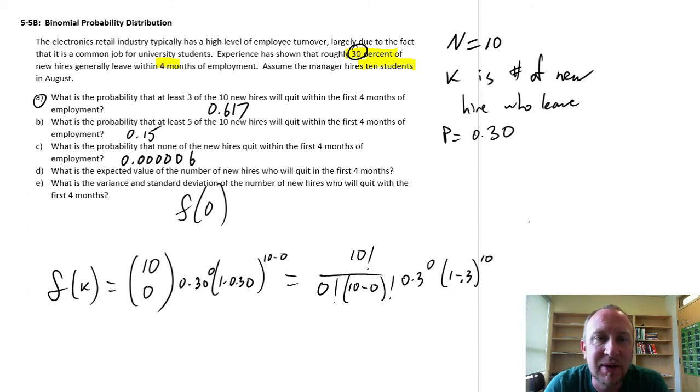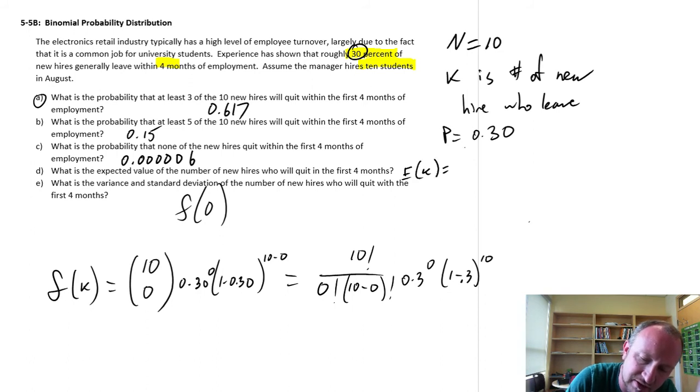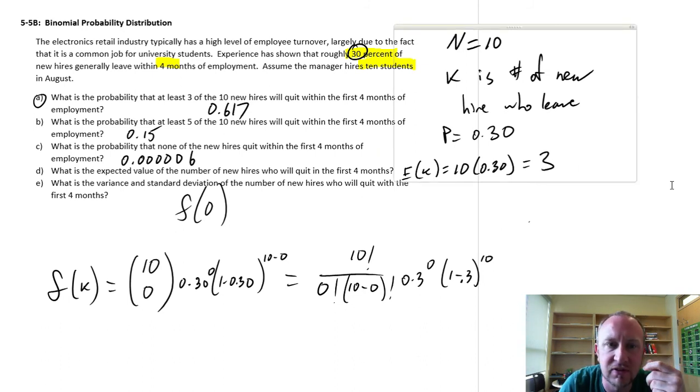What is the expected value of the number of new hires to quit? So, what do we expect? Given that we've hired 10 students, and 30% generally leave in the first 4 months, what's the expected number of students that we'll lose? So, the expected value is going to be our number of trials times the probability of success. So, in this case, I would expect to lose 3 students in that first 4 months.